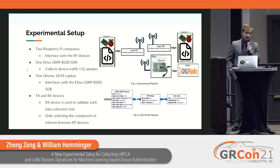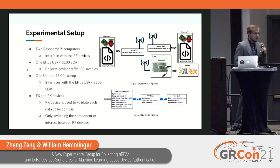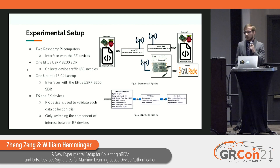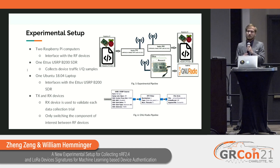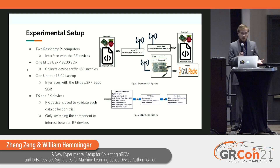In our experimental setup, we have two Raspberry Pi computers interfacing with the NRF devices using C and C++ programs. We also have the Ettus USRP B200 software defined radio running GNU Radio, interfaced with an Ubuntu 18.04 laptop. We use a separate receiver — not just the B200 alone — so we can quickly verify and validate each data collection trial. Since the NRF and LoRa devices operate on fairly common frequencies, our dataset could be corrupted by interference from unknown sources, which would register immediately on the receiver, so we would know not to include that trial.